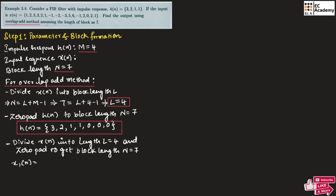x1 of n will be equal to 1, 2, 3, 3. For this we will append 3 zeros to make this length equal to 7. Similarly we will take the next 4 values to form x2 of n, which will be equal to 2, 1, minus 1, minus 2. For this we will append 3 zeros to make this length 7.